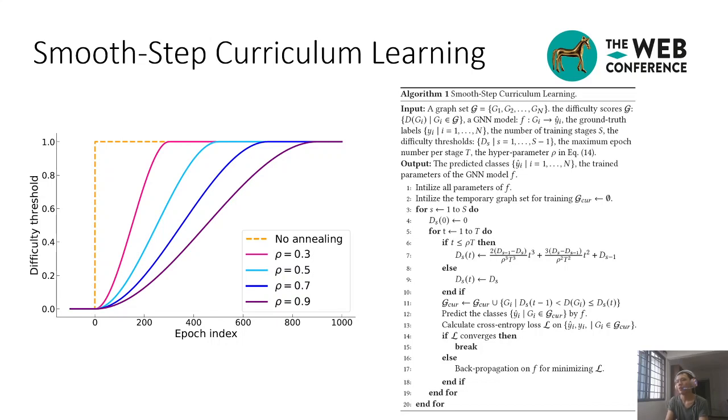Overall, CurrGraph guides the optimization of graph neural networks, which is non-convex, towards better local minima.